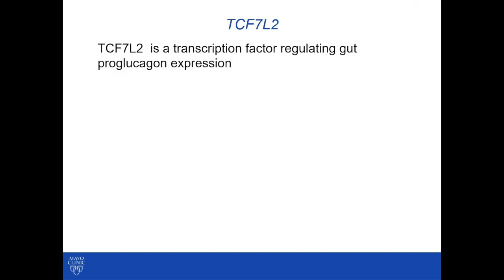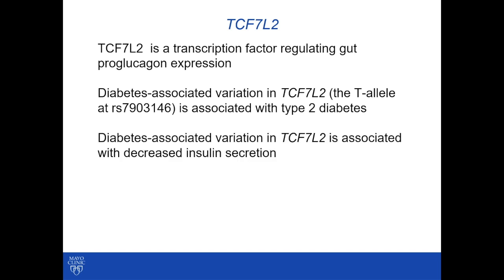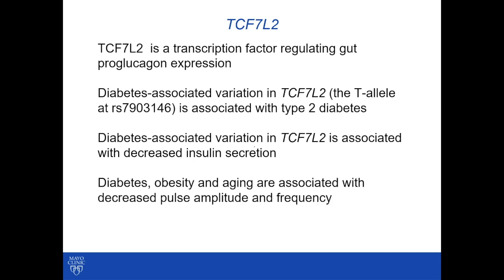As a background, TCF7L2 is a transcription factor which originally was described as regulating gut pro-glucagon expression. Diabetes-associated variation in this locus, specifically the T-allele at RS7903146, is arguably the common variant with the strongest predisposition to type 2 diabetes. This variant has been associated with a decrease in insulin secretion.